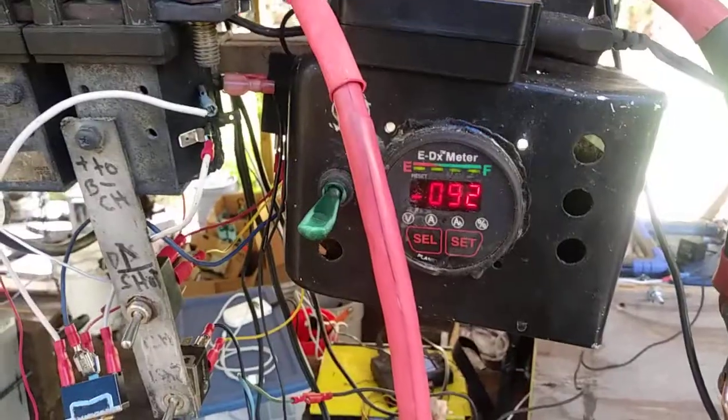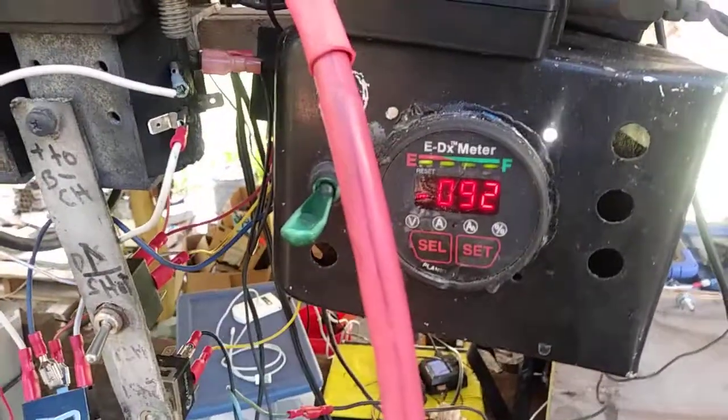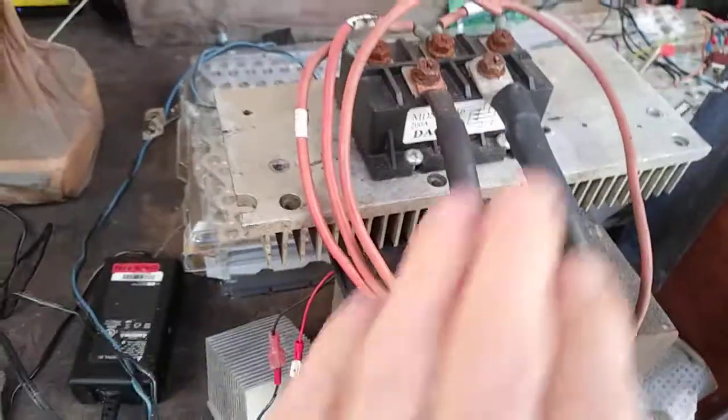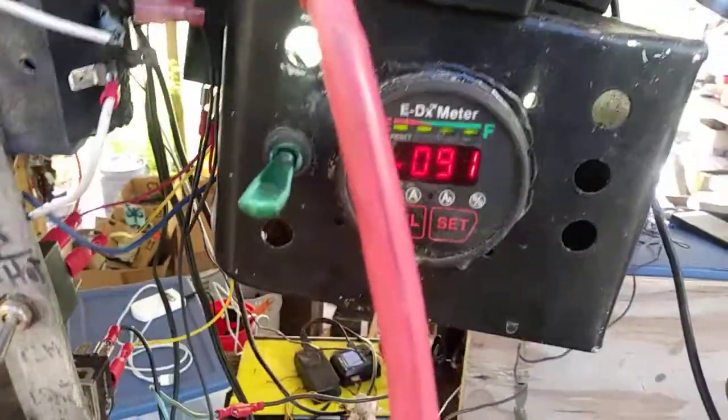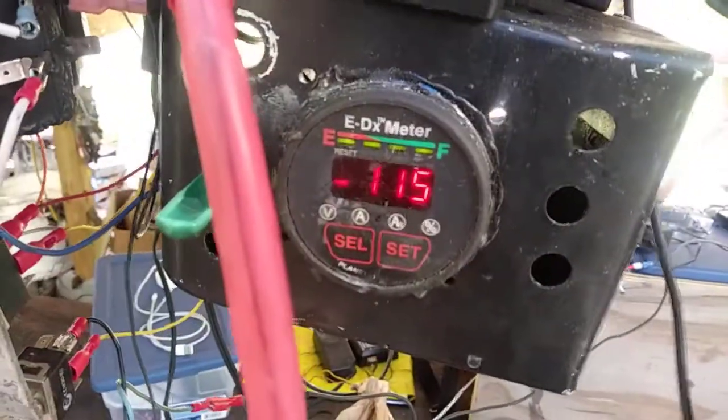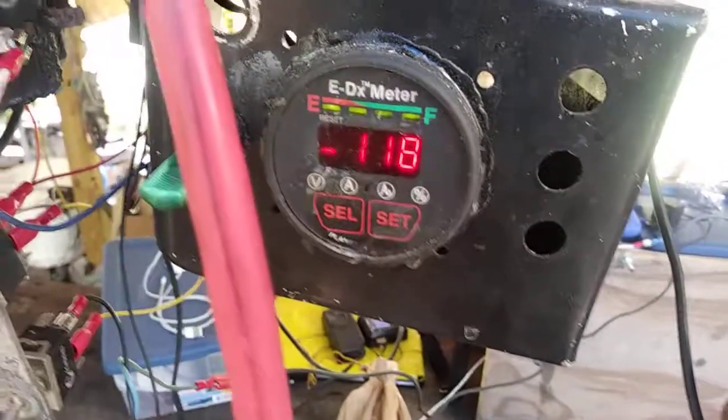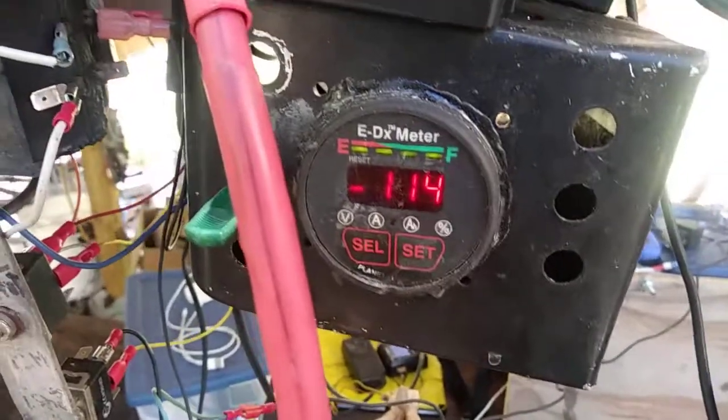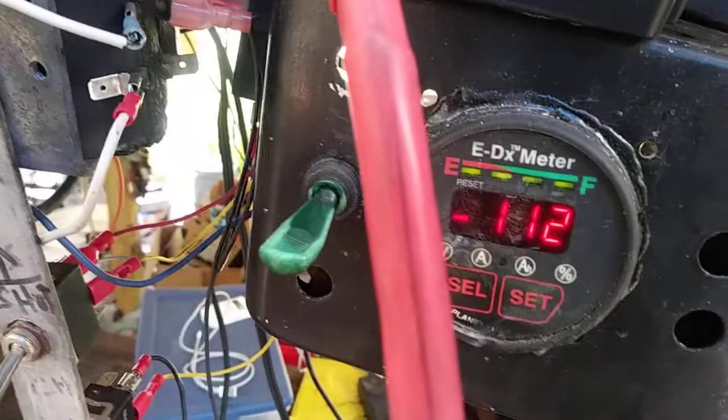Without even any current at all and with our bridge rectifier across here, which drops us a volt and a half, we're actually putting out 90 amps. What would happen if I shorted that out? Look at that, a hundred and five just from there. So that's a good driving down the road amperage.